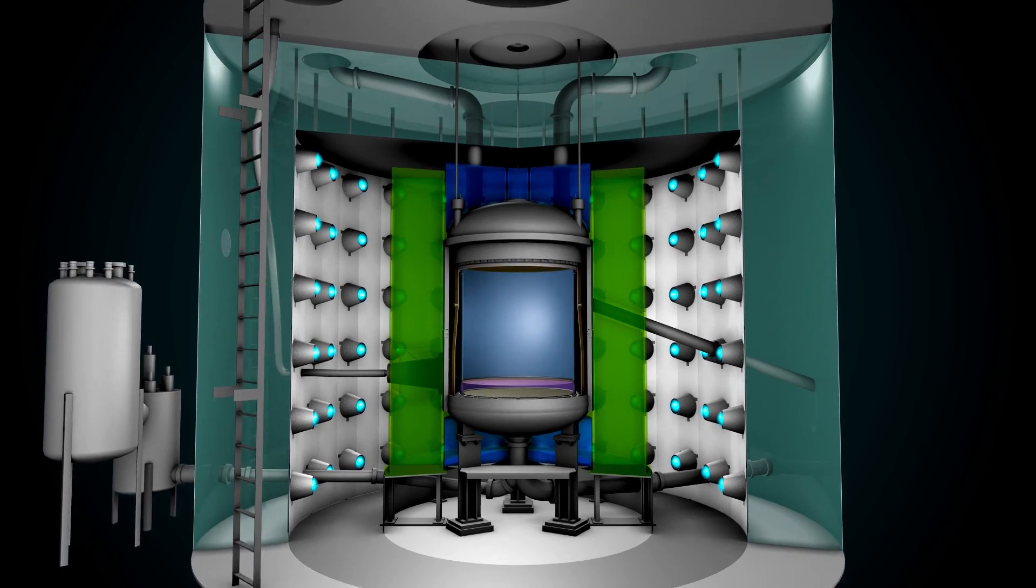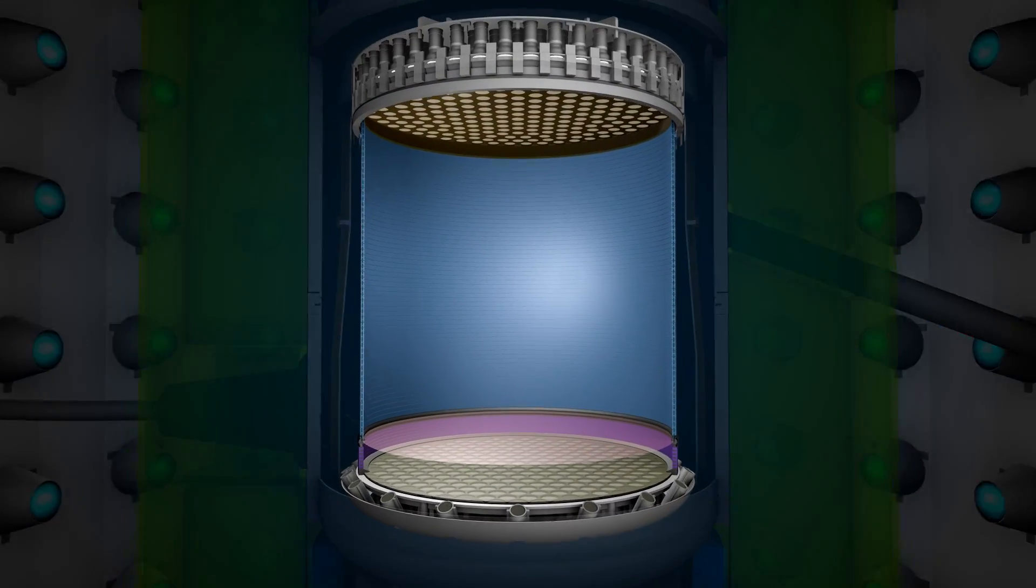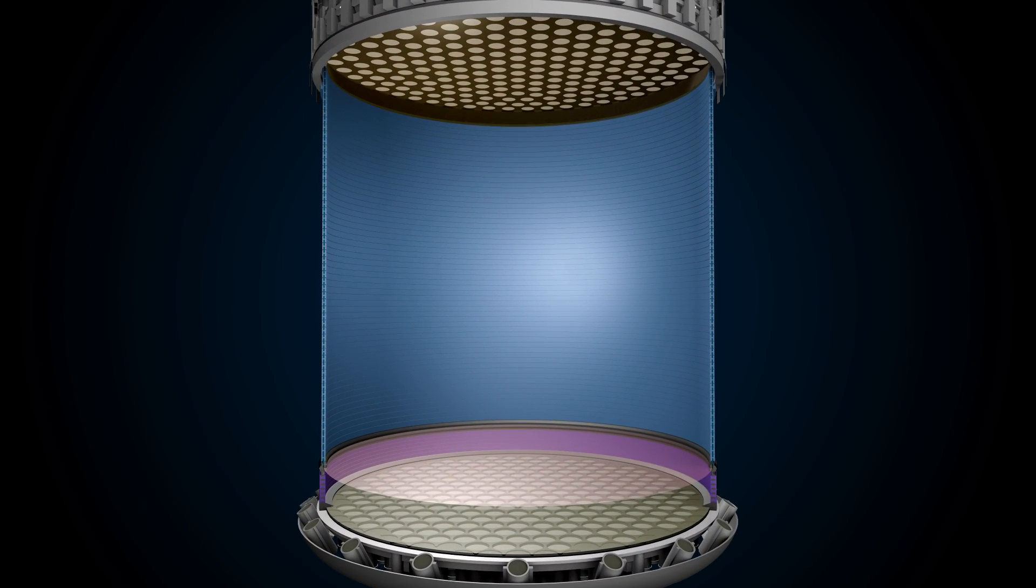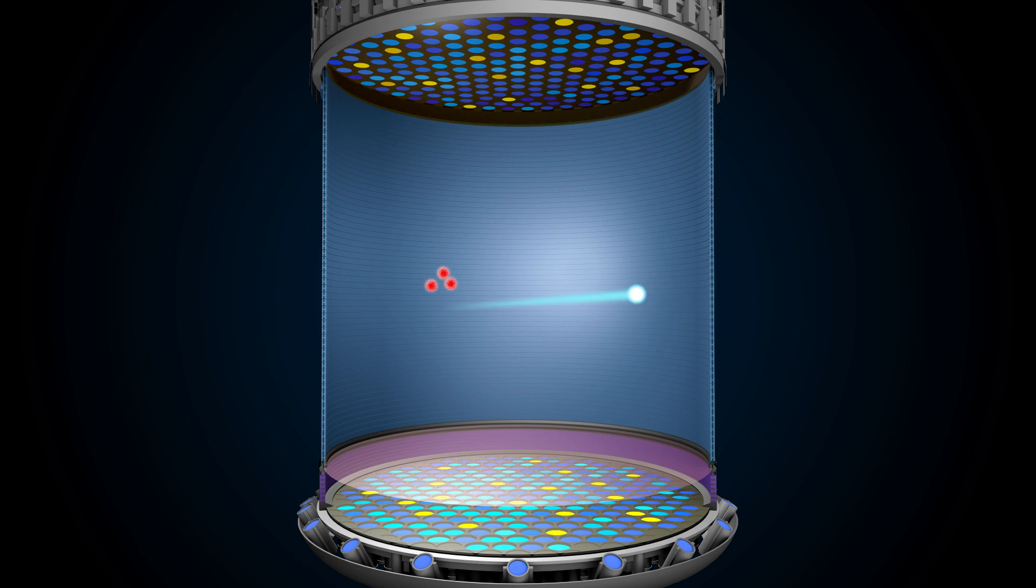LZ's heart is a tank filled with 10 tons of liquid xenon. If a particle streaks through the tank and strikes a xenon nucleus, two things will happen. The xenon will emit a flash of light, and it will also release electrons, which drift in an electric field to the top of the tank, where they produce a second flash of light.